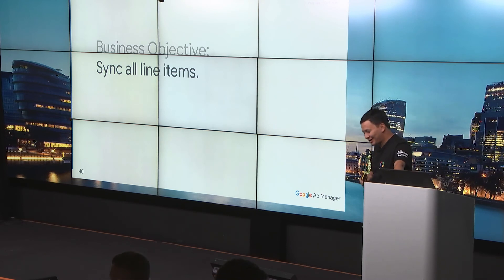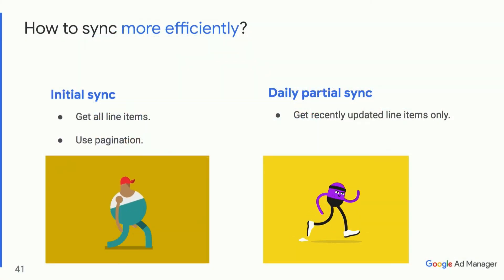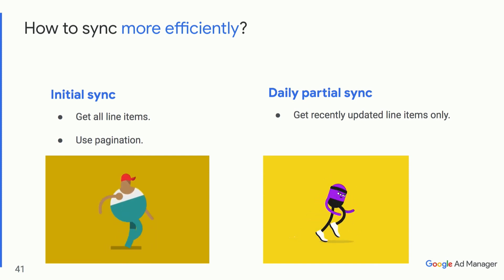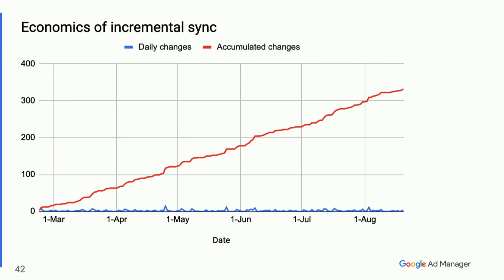But what if you still need to sync all fields of all line items from your ad network? We recommend doing an initial sync to pull all line items with all fields, and then subsequently doing a partial sync to get just incremental updates. It is more efficient to do a daily partial sync than to fully fetch all line items after six months. This chart shows the accumulated changes — including adding and updating line items — in a test network with only a few changes per day.